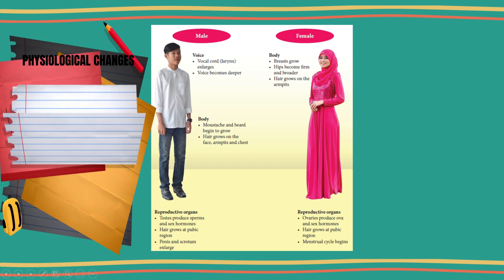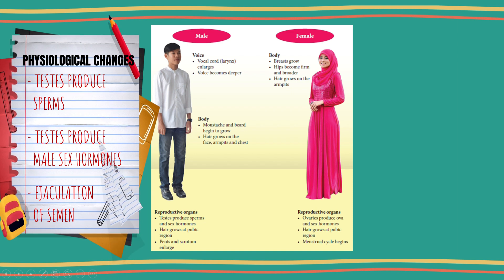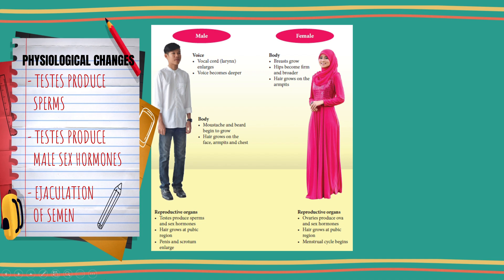Some of the physiological changes that occur in males during puberty are: the testes produce sperm and male sex hormones, and ejaculation of semen begins.